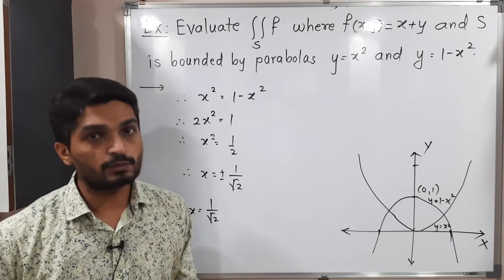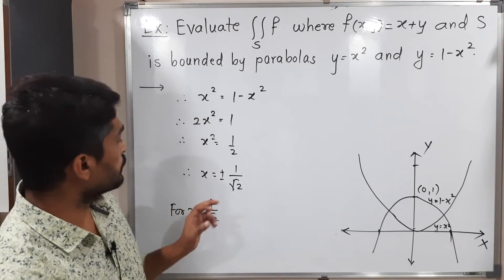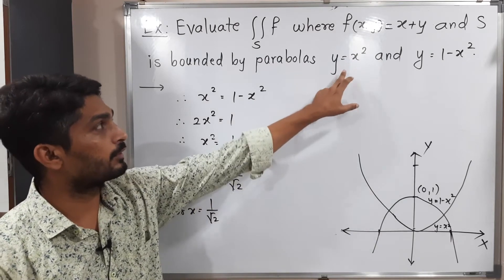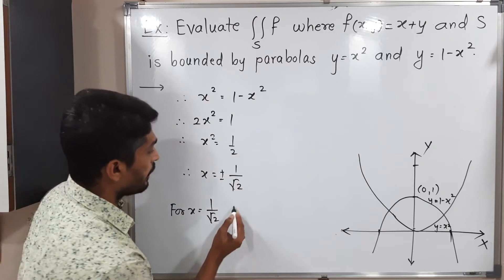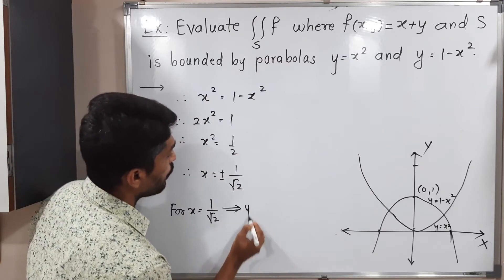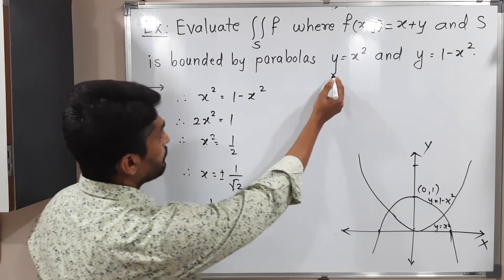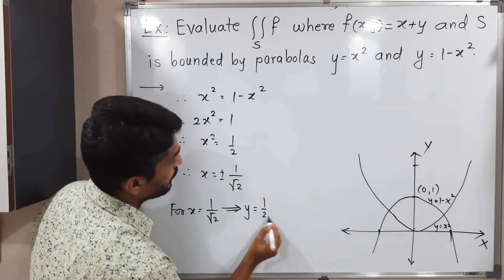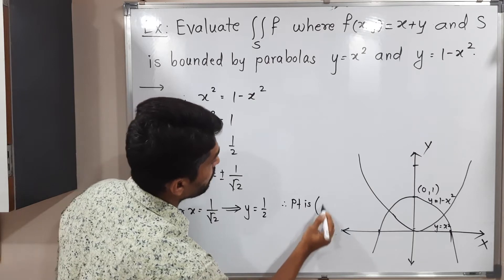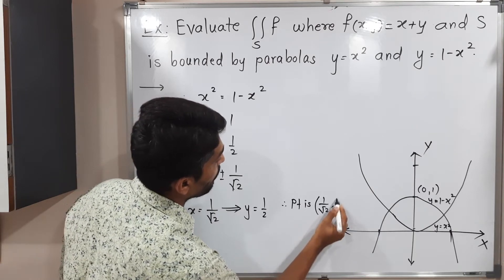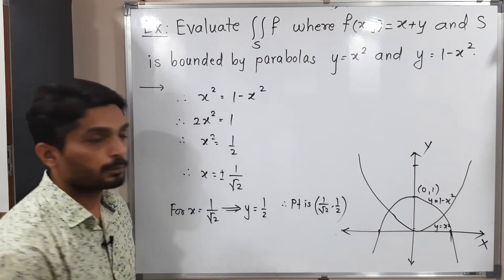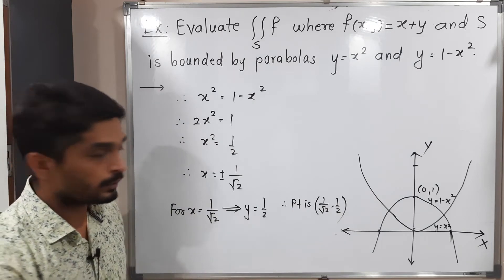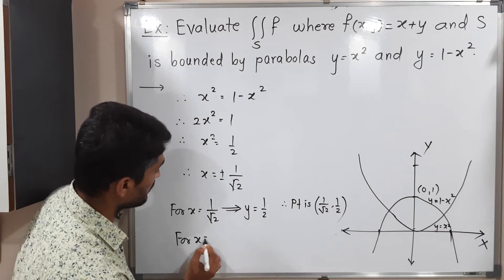For x = 1/√2, we find y by substituting into y = x², giving y = (1/√2)² = 1/2. So the first point of intersection is (1/√2, 1/2).